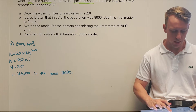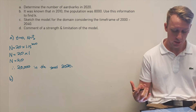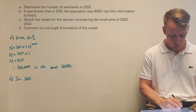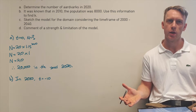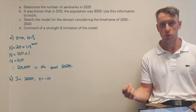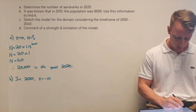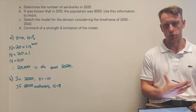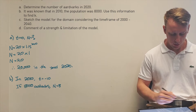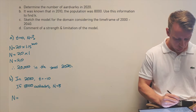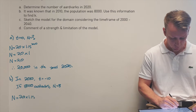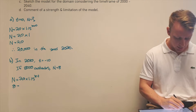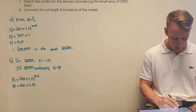We're given additional information: in 2010 the population was 8,000. We use this to find the value of k. In 2010, t equals negative 10, because t equals zero in 2020. And since n represents per thousand, n equals 8. We substitute into the model: n equals 20 times 1.15 to the power of kt, with n equals 8 and t equals negative 10.